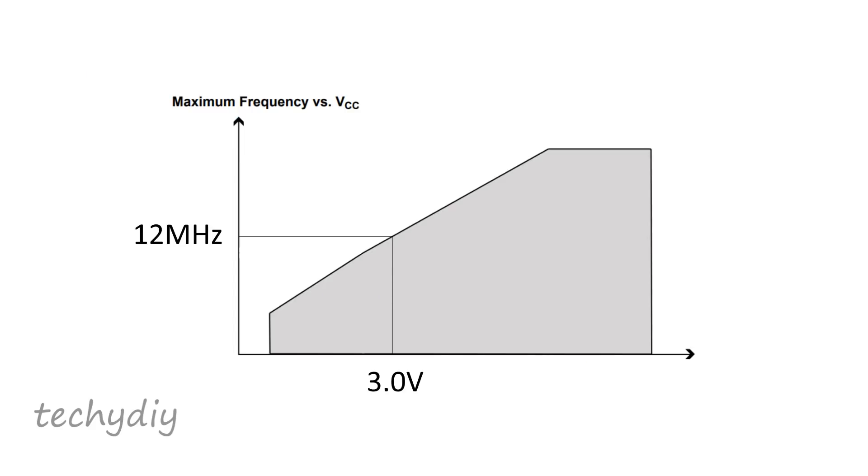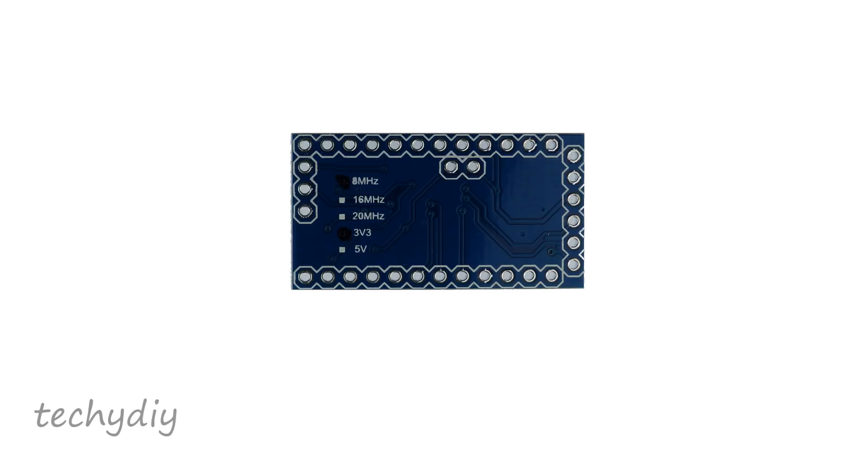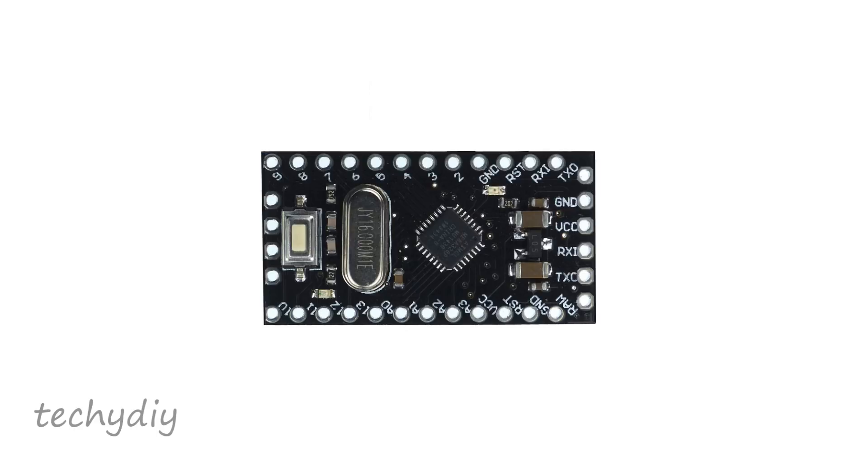And because the maximum clock speed at 3 volts is 12 megahertz we should use a 3.3 volt 8 megahertz Pro Mini. However in practice I have found that the 5 volt 16 megahertz Pro Mini also works ok. Just don't use this combination for anything mission critical.